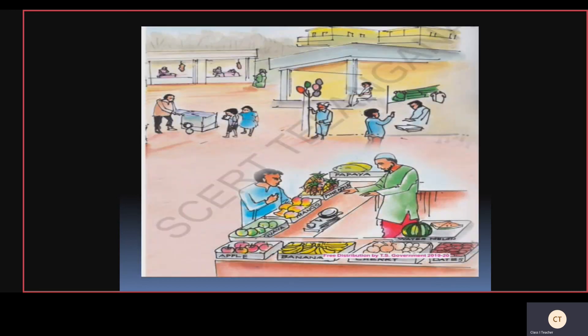On page number 109 you can see these fruits. The fruit seller is selling papaya, pineapple, mango, guava, apple, banana, cherry, dates, and watermelon. You can also see the balloon man selling balloons, the ice cream man selling ice cream, and at the last the meat shop. Market means you can get everything from the market.